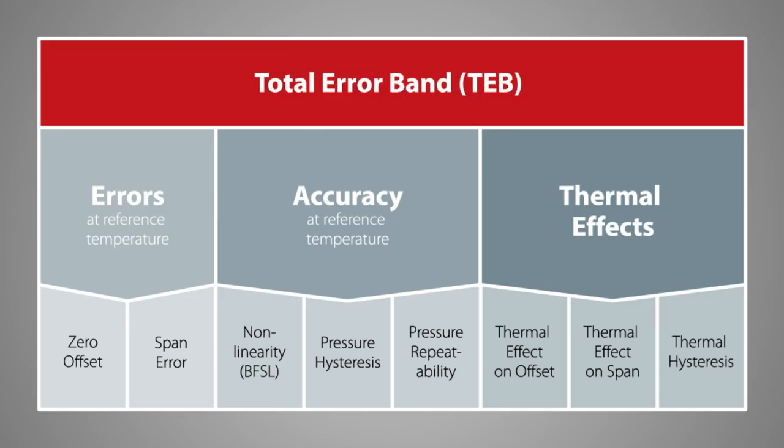These changes are not neglectable and need to be compensated to guarantee a reliable measurement at different temperatures. During the compensation process, the output signals are measured while the sensors are exposed to different temperatures in the climate chambers. The thermal effect on offset and span is calculated and mathematically compensated. It's not possible to compensate the thermal hysteresis, but we do have this influence considered in our total error band expression.